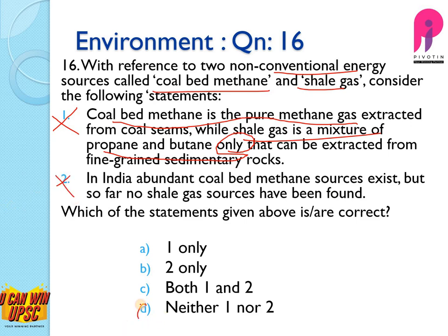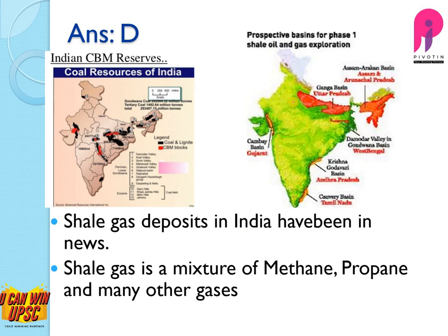You can see the coal bed methane reserves shaded in red. The shale gas basins are found in the following places: Kaveri basin, Krishna-Godavari, Damodar Valley basin, Harakan basin, Ganga basin, and Cambay basin — these are prospective basins for shale gas and oil exploration. Most of these are fertile agricultural lands, which may lead to environmental and social problems.